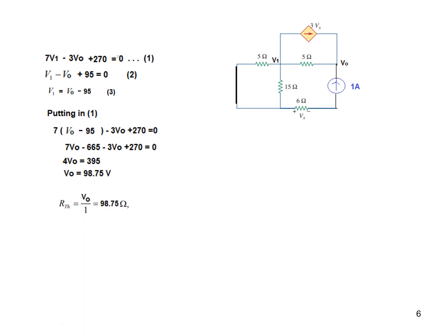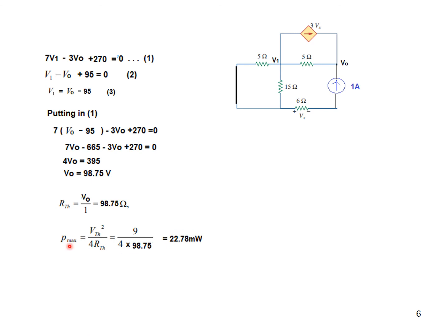With V0 found, Rthevenin equals V0 divided by 1 ampere, giving Rthevenin equals 98.7 ohms. For the maximum power, using the formula Vthevenin squared divided by 4 times Rthevenin: Vthevenin is 3 volts, so 3 squared equals 9, divided by 4 times 98.7, giving a maximum power of 22.78 milliwatts. This demonstrates how to solve maximum power transfer problems with dependent sources.